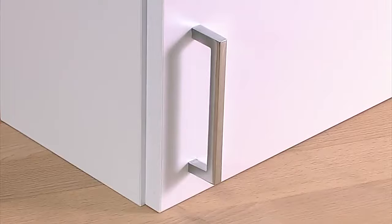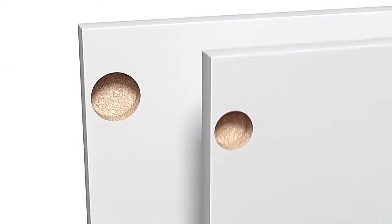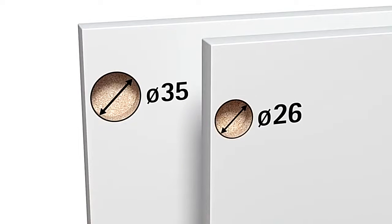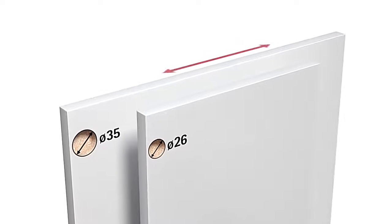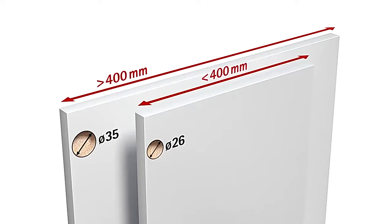But how many hinges do you need and in which size? As a rule of thumb, use small hinges with 26mm cups for doors in widths up to 400mm, and hinges with 35mm cups for wider doors.